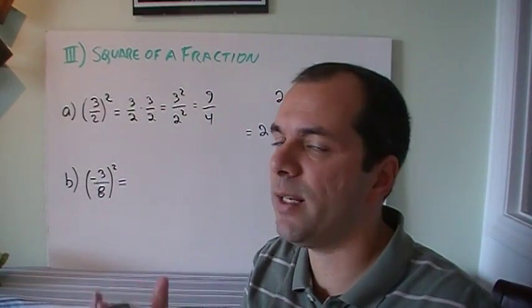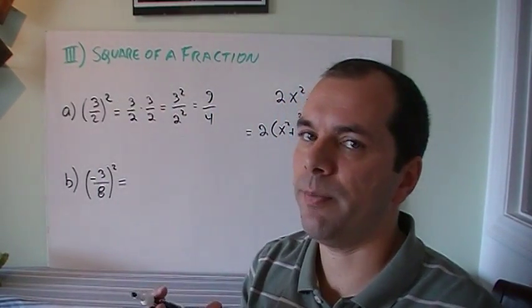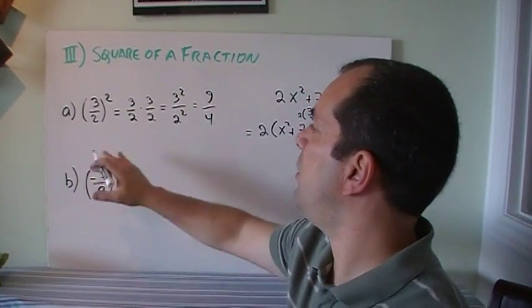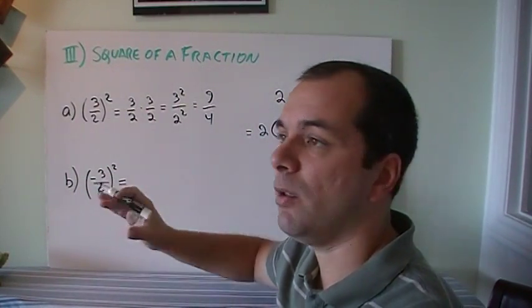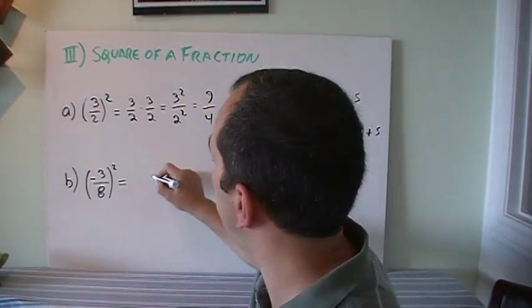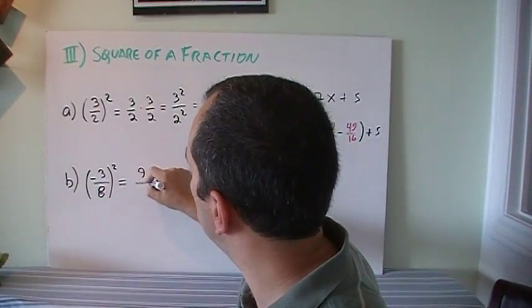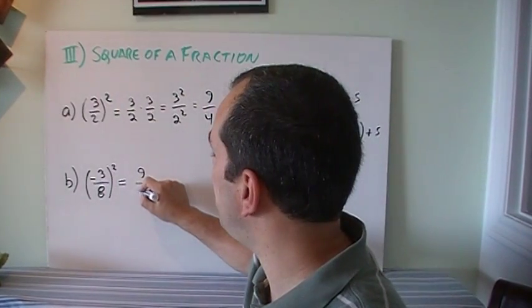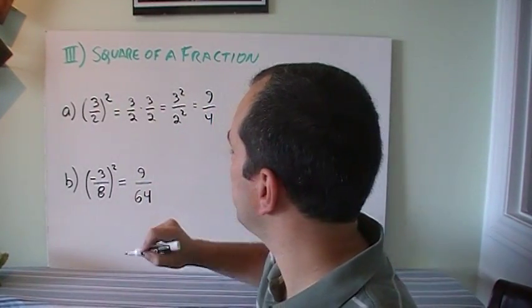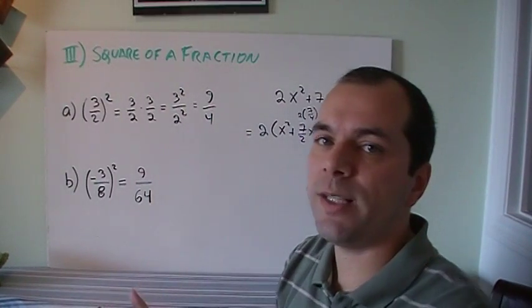So when I square a fraction, I basically square the top, I square the bottom. Super simple. So without writing all this stuff, if I need to square -3/8, what's -3 squared? It's positive 9. And what's 8 squared? Hopefully you remember your times tables. 64.